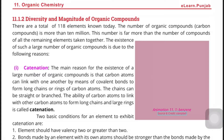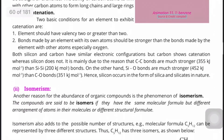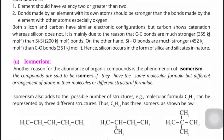What is the amount and magnitude? The first reason we discussed is catenation. The second reason for the diversity of organic compounds is isomerism. Isomerism means that the molecular formula is the same, but the structural formula is different. Compounds are said to be isomers if they have the same molecular formula but a different arrangement of atoms in their molecules.